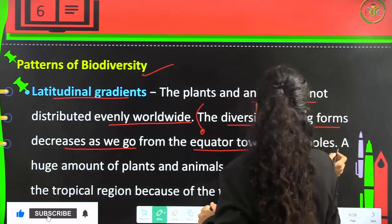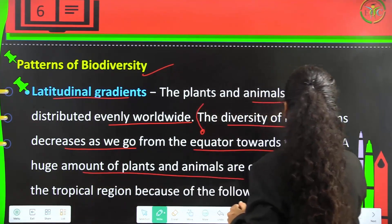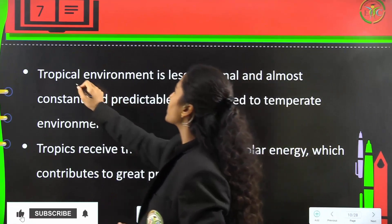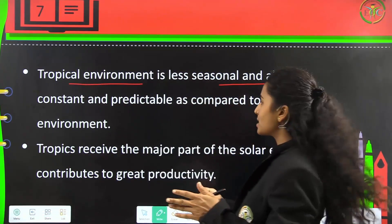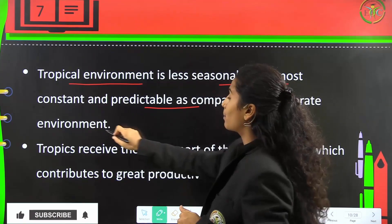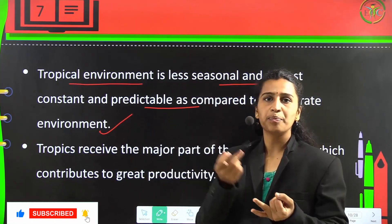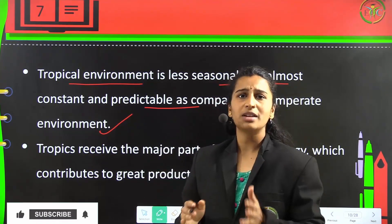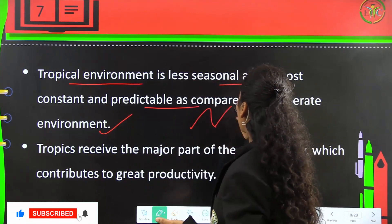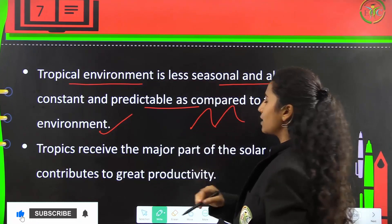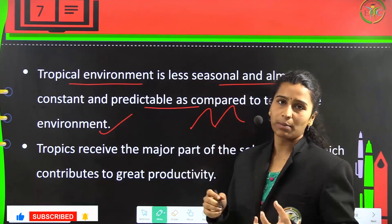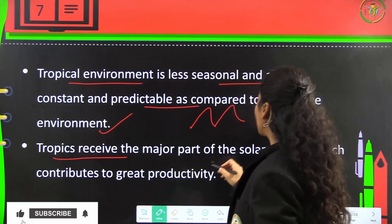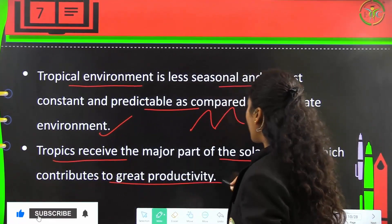The tropical environment is more constant and predictable as compared to the temperate environment. In temperate regions there are seasons — rainy, winter, summer — but the tropical polar regions are filled with ice, having constant temperature. Tropics receive the major part of the solar energy, which contributes to greater productivity.